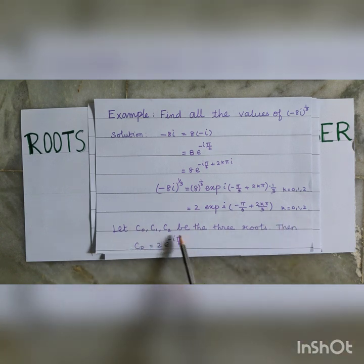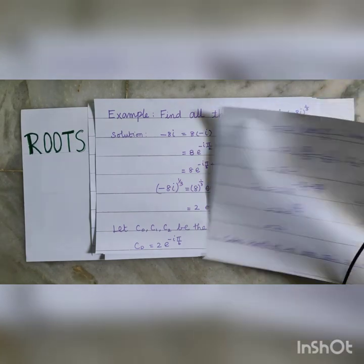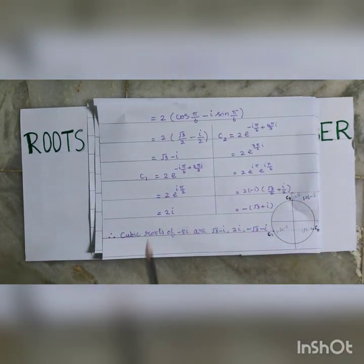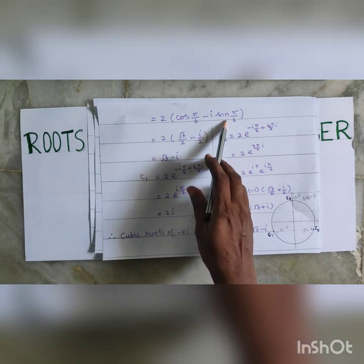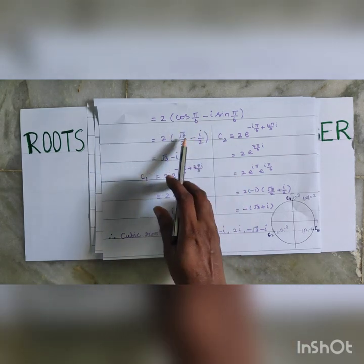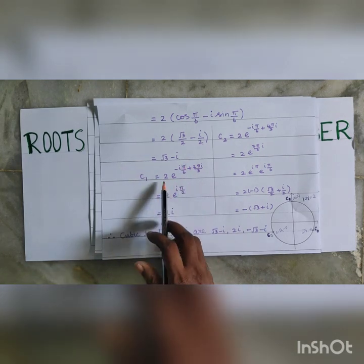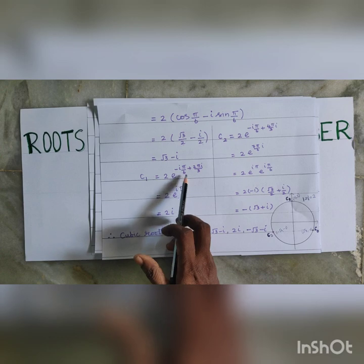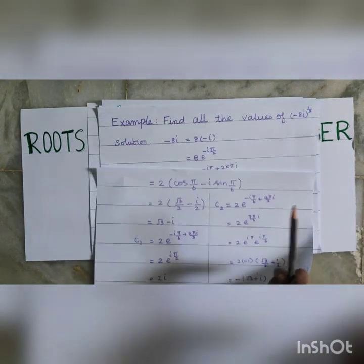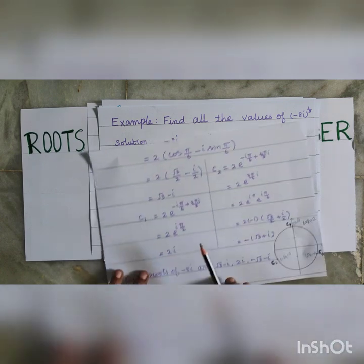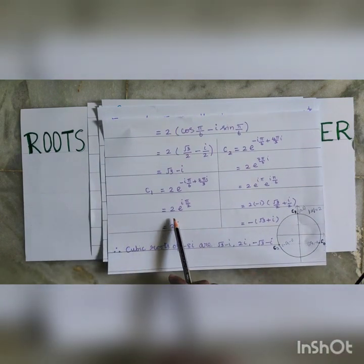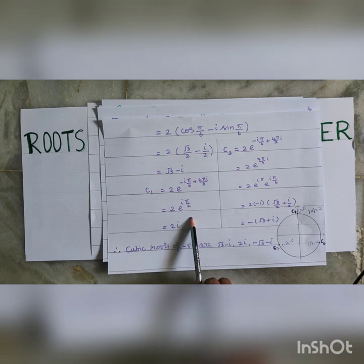Let C0, C1, C2 be the 3 roots. Then C0 equal to 2 into e power minus i pi by 6, that is 2 into cos pi by 6 minus i sin pi by 6, which is 2 into root 3 by 2 minus i by 2, giving us root 3 minus i. Now C1 equal to 2 into e power i times minus pi by 6 plus 2 pi by 3, that is putting k equal to 1, which equals 2 into e power i pi by 2, giving 2i since e power i pi by 2 equals cos pi by 2 plus i sin pi by 2, and sin pi by 2 is 1.